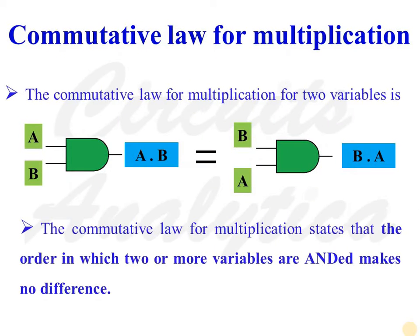Next is commutative law for multiplication. It states that the order in which two or more variables are ANDed makes no difference. If there are two variables A and B, according to commutative law for multiplication, we can write A AND B is equal to B AND A.